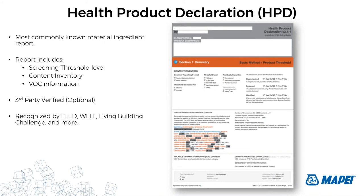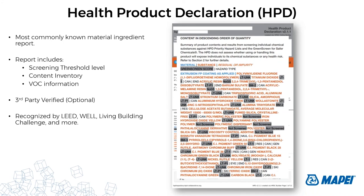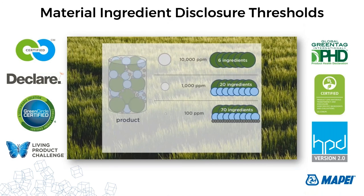Health Product Declarations, or HPDs, are probably the most familiar and most commonly requested form of material ingredient reports. HPDs do not have to be third-party assessed or verified — they can be self-declared. They can be used on LEED, WELL, and Living Building Challenge projects. The HPD shows hazard screening scores, materials, substances, and GreenScreen scores — for example, LT-UNC means not screened or benchmark scored. All substances screened have their scores listed on the HPD. That covers all of the different material ingredient reports available for use on LEED and other green building programs.